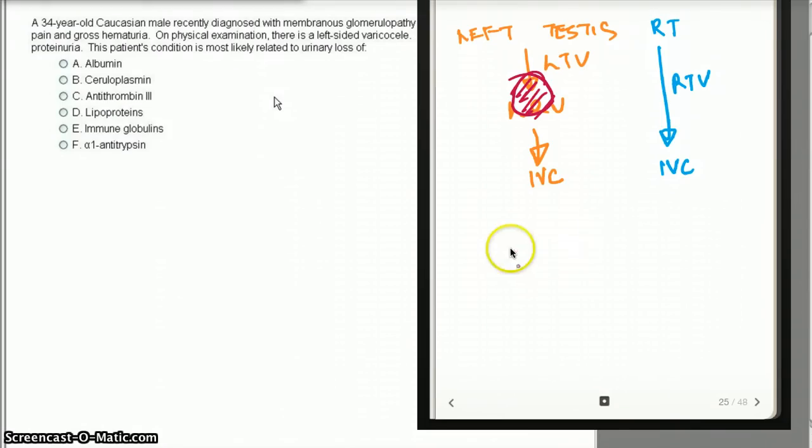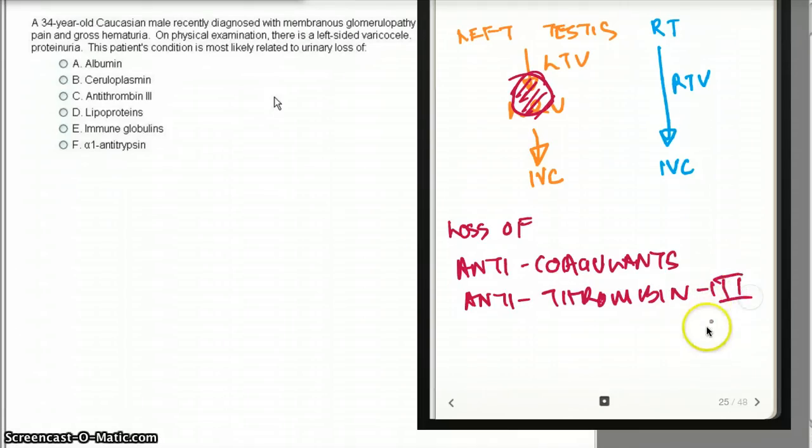Now, in MGN, MGN is the most common cause of nephrotic syndrome and many important proteins are lost as a result of MGN. There is going to be loss of anticoagulants.